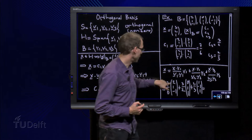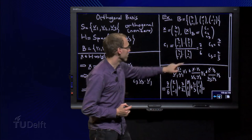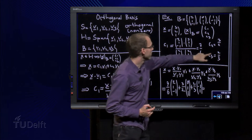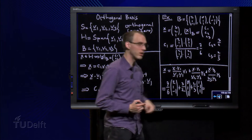We have c1 equals 7 over 6, so we plug it in here. We have c2 equals 3 over 2, so we plug it in over here. And we have c3 equals 2 over 3, so we plug it in over here.